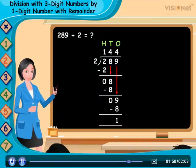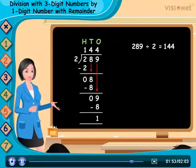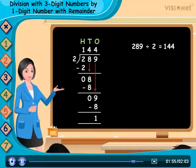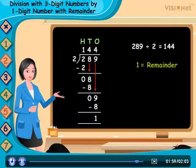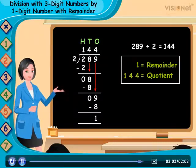Now there is no digit left to bring down. So, we stop division here. So, here 1 is the remainder and 144 is the quotient.